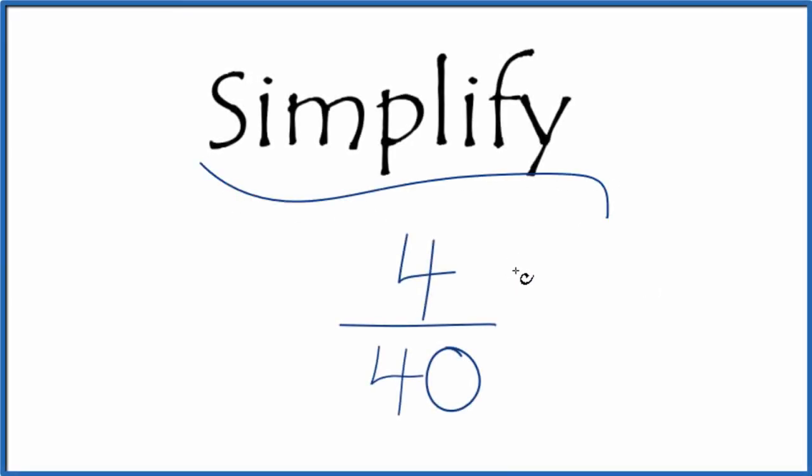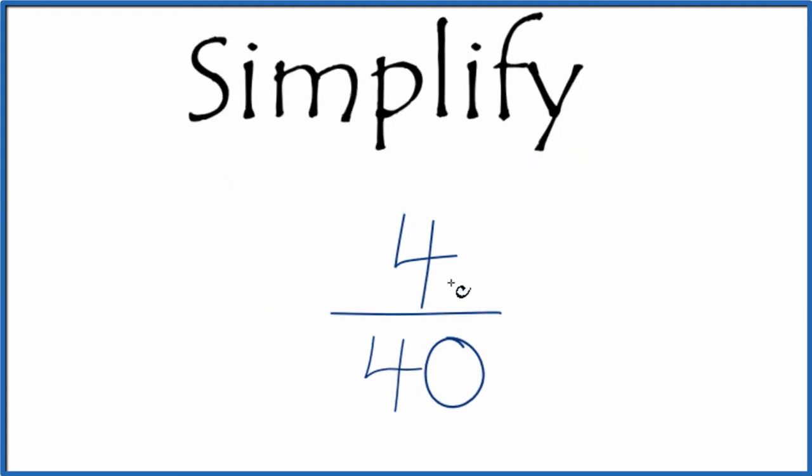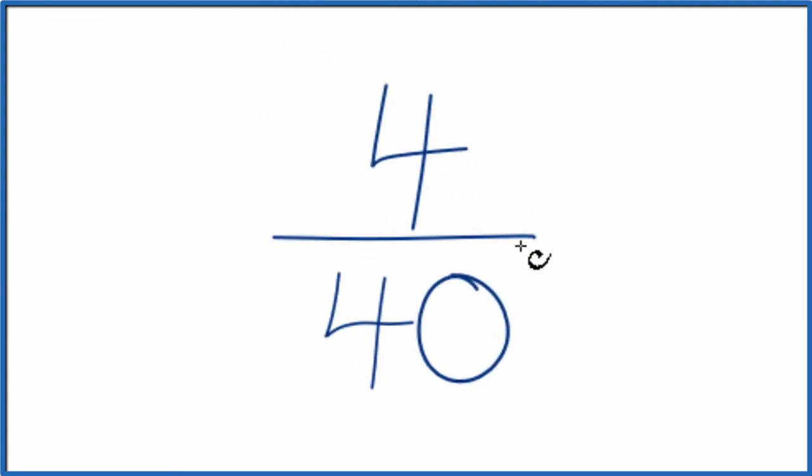If you're asked to simplify the fraction 4 over 40, here's how you do it. What we want to do is find another fraction that's equal, has the same value as 4 over 40. We call that an equivalent fraction, but we want it to be in lowest terms.